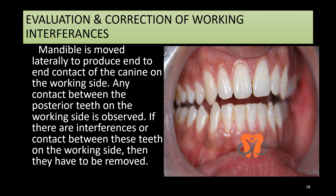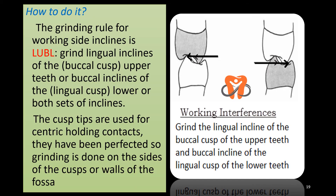Coming to working side interferences: the mandible is shifted laterally to bring end-to-end contact of the canine on the working side. We check the working side — if a contact is present, those are the interferences and they must be removed. The rule followed here is LUBL: we grind the lingual inclines of the upper buccal cusp and the buccal incline of the lower lingual cusps. The cusps are used for centric holding contact and must be preserved, so grinding is done on the sides or walls of the cusp and not the tips.